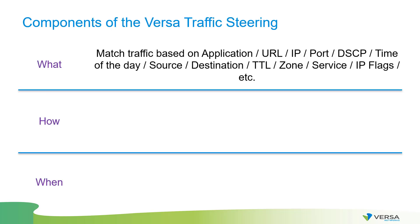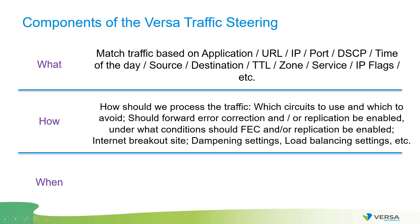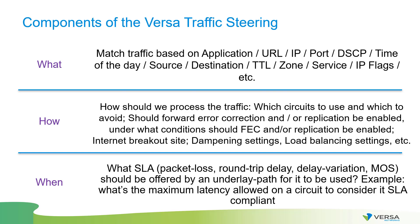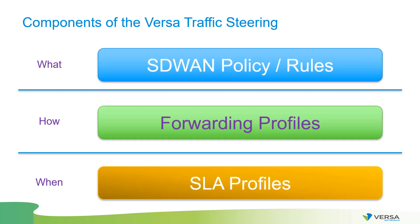There are three main components of SD-WAN traffic steering in Versa networking. They answer the following questions: what needs to be steered — what applications or URLs need to be matched; how it should be steered — which circuits, load balancing, or replication settings; and when it should be steered — when a path is SLA compliant or non-compliant. In Versa SD-WAN, this divides into SD-WAN policies and rules, forwarding profiles, and SLA profiles.